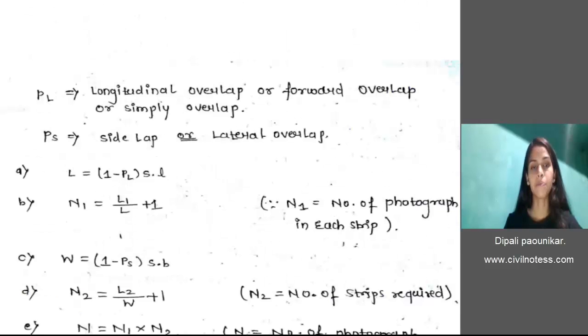Now the longitudinal overlap is denoted by PL and the side overlap is denoted by PS. The formulae we are using in this expression: L equals 1 minus PL into S into L.